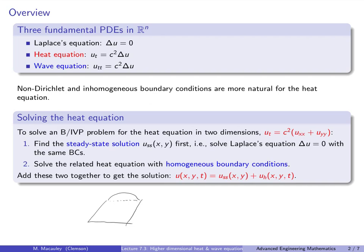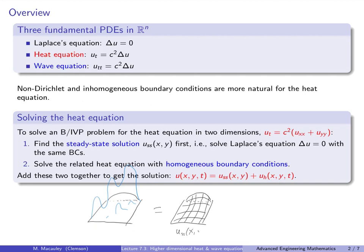Here's a picture. Suppose we want to solve the heat equation on a square region with inhomogeneous boundary conditions. Let's suppose the initial condition is something wild and crazy — some big surface. Over time, heat is going to dissipate; this thing will flatten out. What we will get is the steady state solution, which is the harmonic function on this boundary — the soap bubble solution. This is not changing over time; it's fixed.